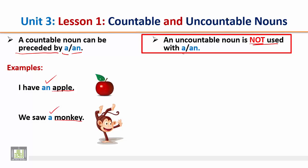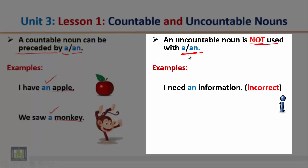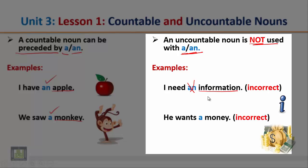On the contrary, an uncountable noun is not used with 'a' or 'an.' Example: 'I need an information' — this sentence is incorrect because the word 'information' is an uncountable noun. Another example: 'He wants a money' — this is incorrect because 'money' is an uncountable noun. You have to say 'He wants some money.' So don't use 'a' or 'an' with uncountable nouns.